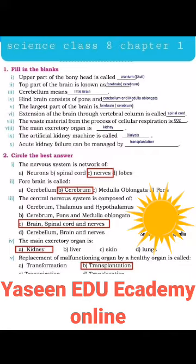The nervous system is a network of nerves. The central nervous system is composed of brain, spinal cord, and nerves. The main excretory organ is kidney. Replacement of a malfunctioning organ by a healthy organ is called transplantation.